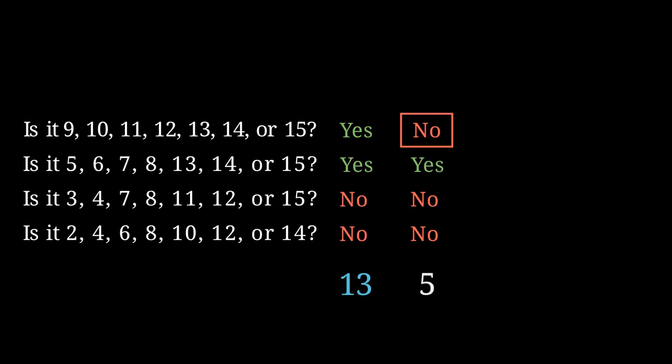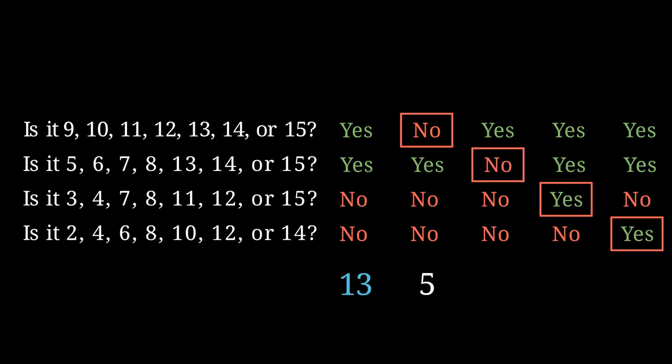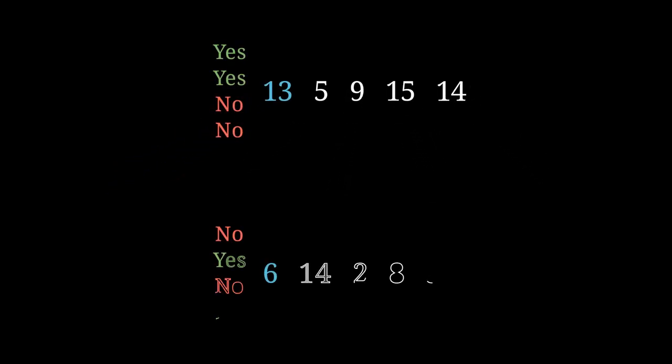If we do the same for the possibility of a lie on the second, third, and fourth questions, we see that we really only have five numbers left that could still potentially be the secret number. Of course, if they were to give a different set of answers, we'd have a different collection of five numbers. So just to make things a little bit more generic, let's assume we've asked our four questions, and we've analyzed in this way which five numbers are still possible.